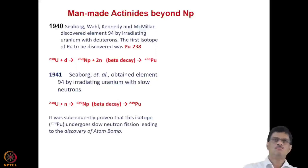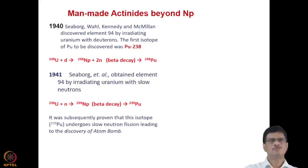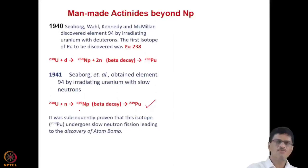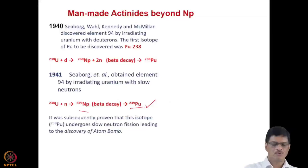Beyond neptunium, many other actinides were discovered. Pu-238 was discovered by Seaborg, Wahl, Kennedy, and McMillan in 1940 — element 94 — by irradiating uranium with neutrons from the cyclotron facility at the Lawrence Radiation Laboratory. This was the first plutonium isotope discovered. Subsequently, Pu-239 was discovered by Seaborg et al. by irradiating uranium with slow neutrons: U-238 captures a neutron giving Np-239, which undergoes beta decay to give Pu-239. This Pu-239 is very important — it is the fissile isotope of plutonium used in reactors and subsequently in the atom bomb.